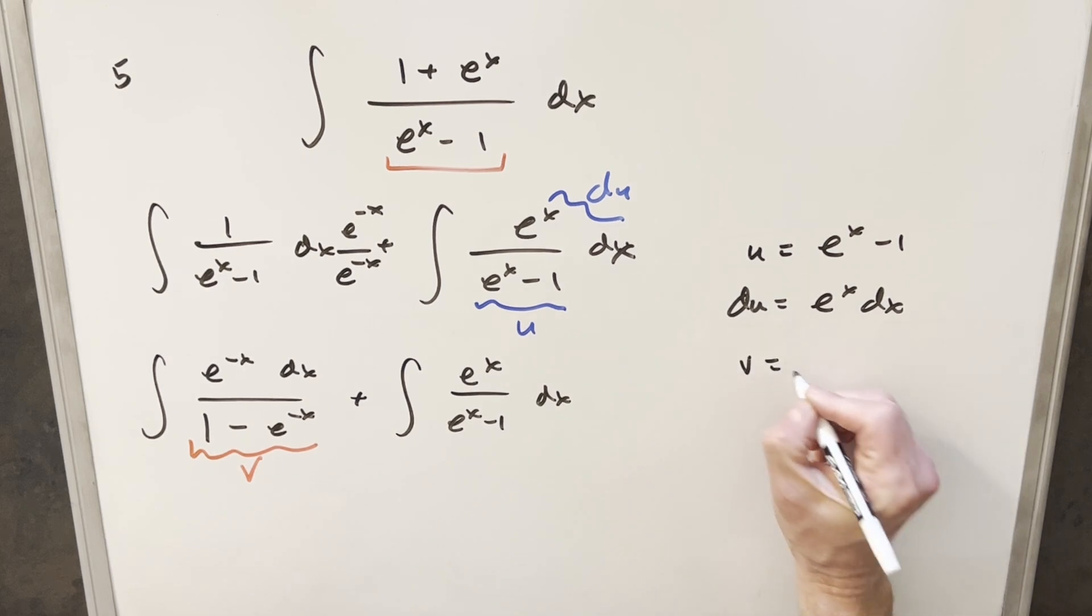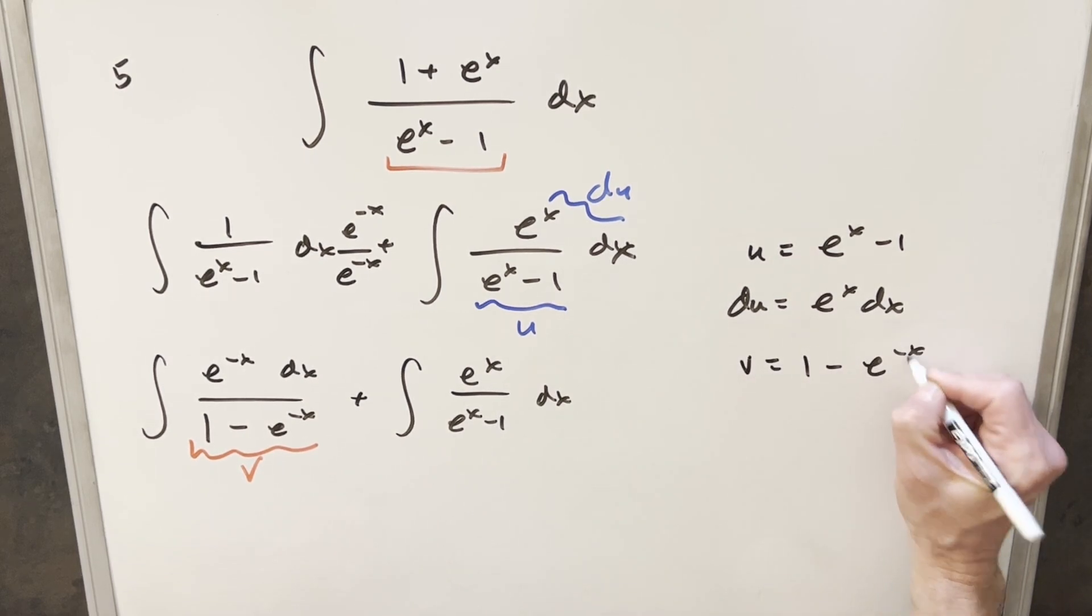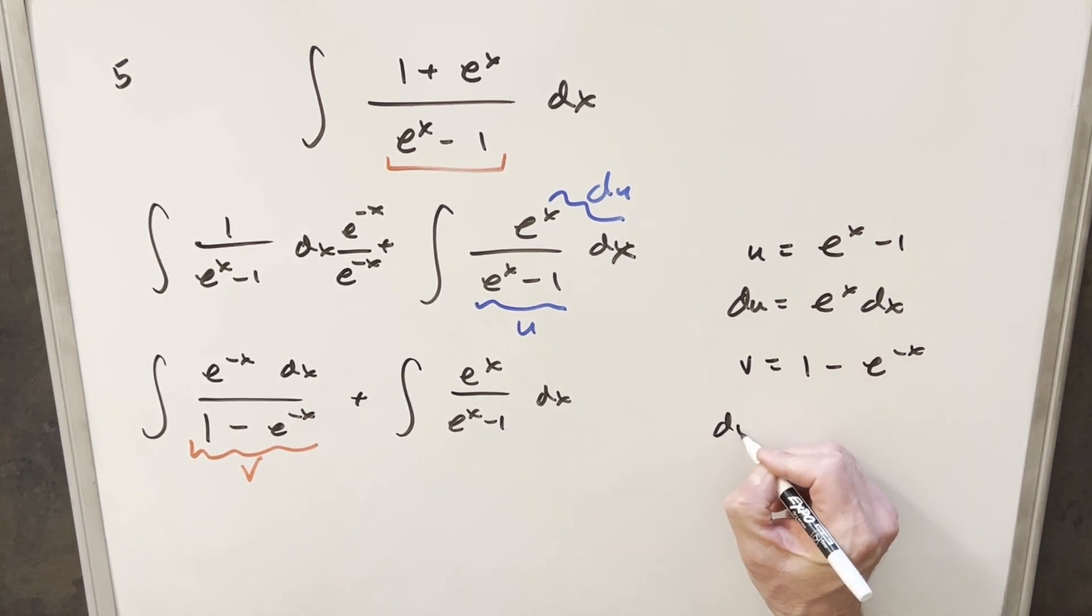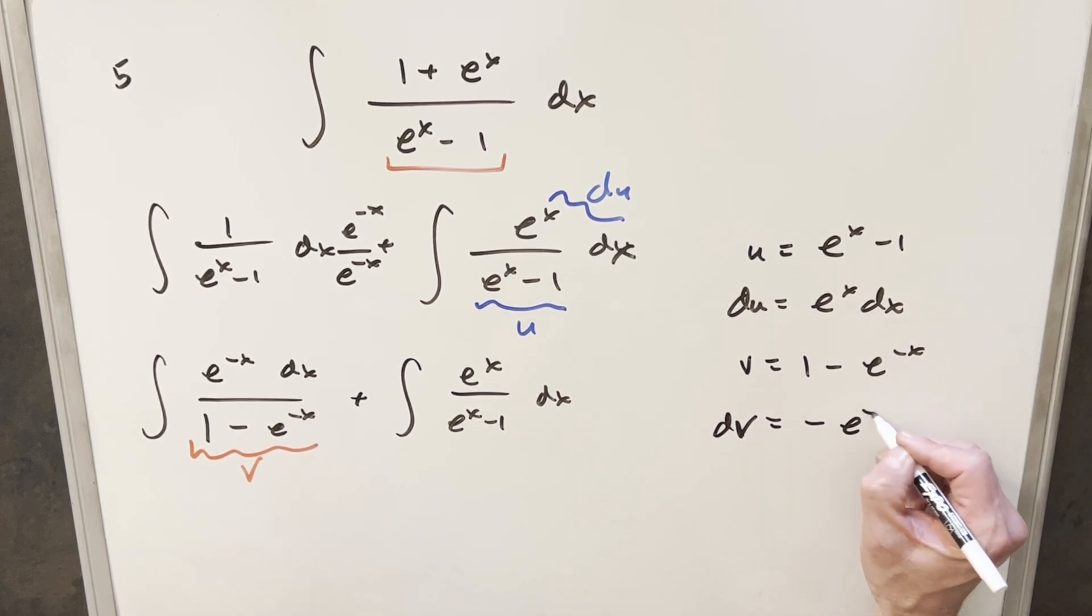So we'll say v equals 1 minus e minus x. Take a derivative. Now dv, derivative of 1 is 0. Derivative of this is going to be minus e minus x.